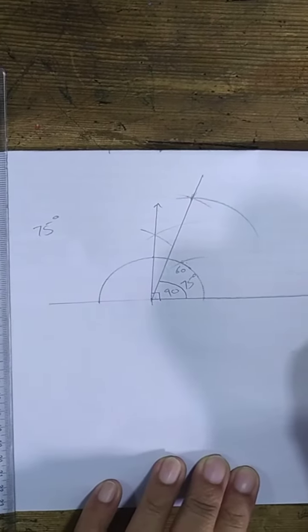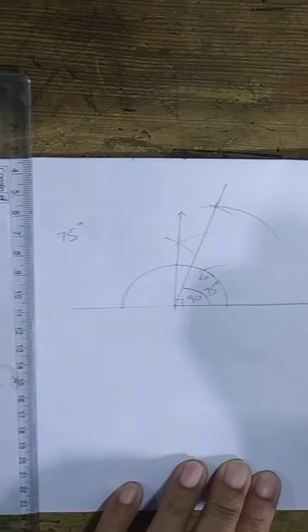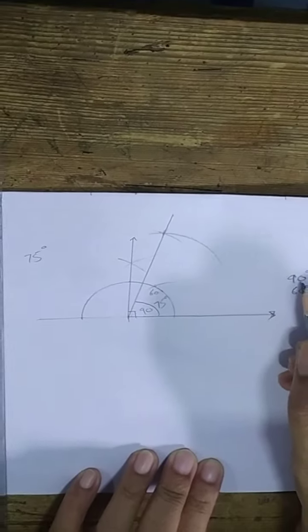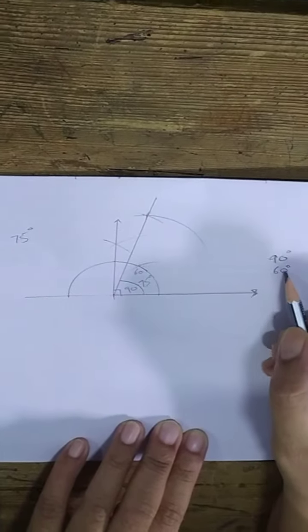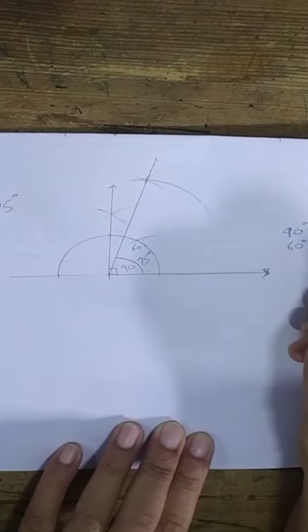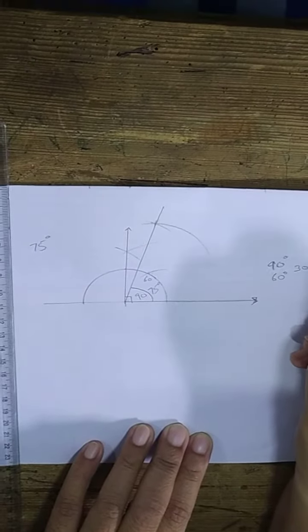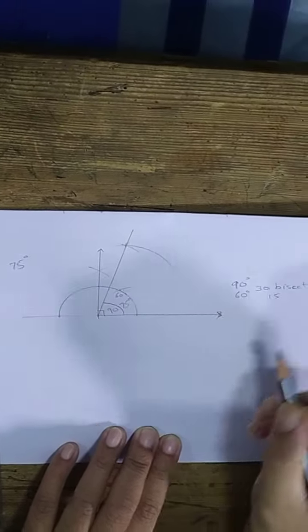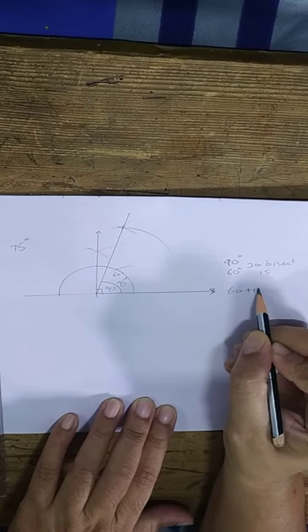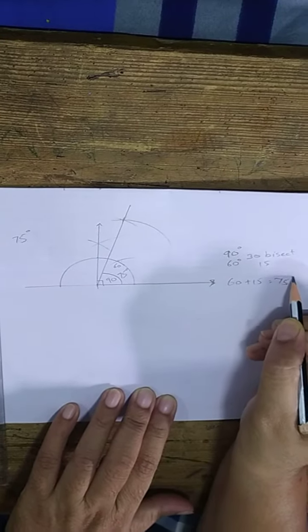First we have to draw 90 degrees. Then we have to take 60 degrees. The distance between 90 and 60, that is 30. And if we bisect it, we get 15. So, 60 plus 15, we got 75 degree angle.